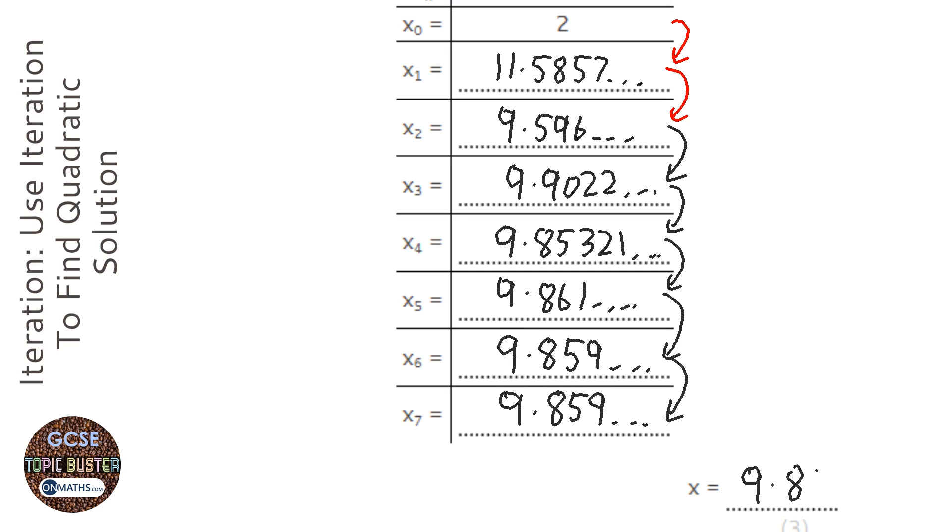My answer will be 9.86. But like a lot of questions on the exam, it's the working out that gives you the mark, so you have to show all the stages: your x1, x2, x3, x4, x5, x6, and then we did the next seven just for the heck of it.